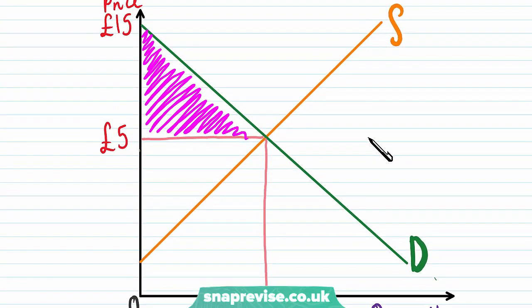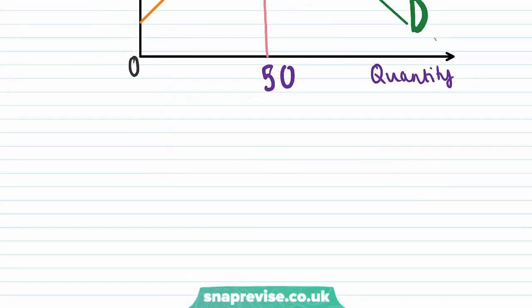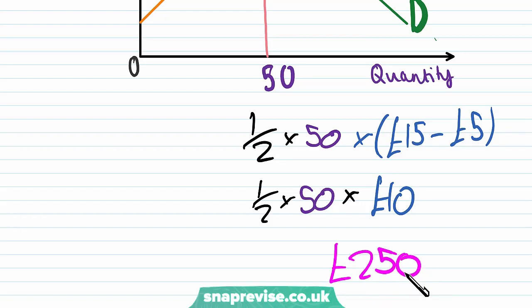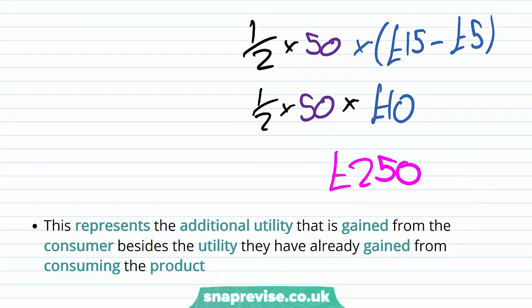So here are our numbers and the quantity in which it's purchased is 50. So let's calculate our consumer surplus. The area of that triangle is going to be a half times by 50, which is our quantity, times by the difference of our equilibrium and maximum price. So we'll have a half times 50 times 10 pounds. So our consumer surplus is 250 pounds. 50 times 10 pounds is 500 times it by half is 250 pounds. So this represents the additional utility that is gained from the consumer besides the utility they have already gained from consuming the product.